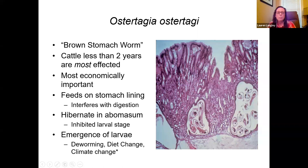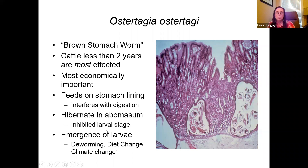A problem with some of these parasites is they can hibernate. The brown stomach worm can hibernate in the abomasum and hang out as long as it wants, then all of a sudden become active. Deworming, diet change, and climate change appear to help activate this particular type.